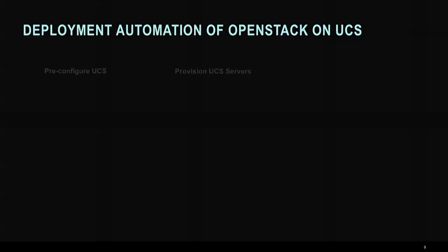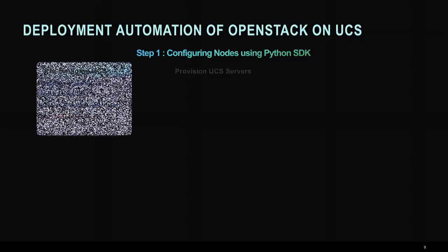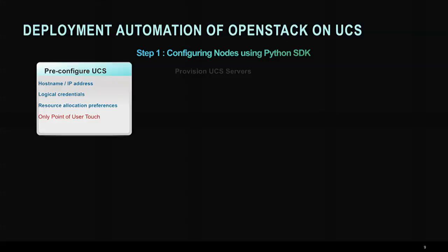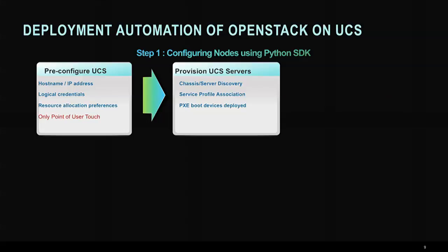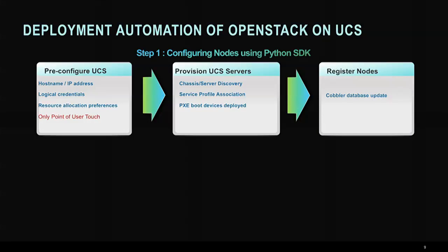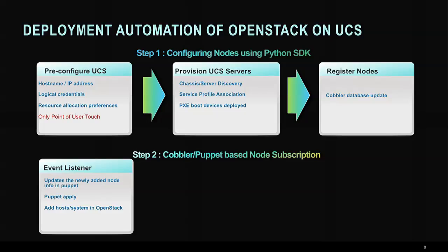We've also innovated on automation-based technologies that make it very easy to get new UCS nodes automatically part of your OpenStack deployment. We have a Python-based SDK which is publicly available. You configure the UCS chassis one time, and from that single point of contact the chassis will discover all the UCS nodes. If they're bare metal and need to be PXE-booted, that will happen. Once the nodes come online, they'll register with Cobbler, and then the event listener kicks in. Any time a new UCS is plugged into the chassis and fits your service profile, it can automatically become part of Nova — making it very easy to add nodes and scale capacity at a remote data center or site.